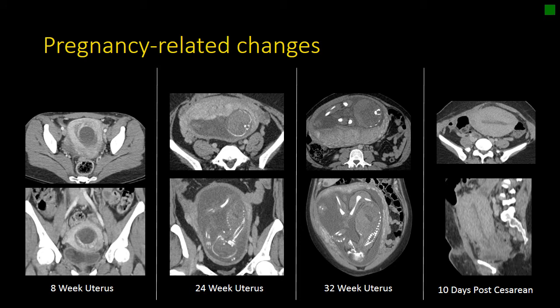We don't often use CT in pregnancy, but when we do, it is important to be familiar with the normal appearance of the uterus during pregnancy. Early in pregnancy, the uterus will often be enhancing with a gestational sac in the center, and early placentation or decidual formation evident. It is important not to mistake this for a uterine mass and realize that you don't see the fetal pole early on. As the pregnancy develops, we begin to see the placenta form as a homogeneously enhancing mass in continuity with the uterus.